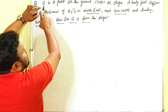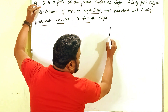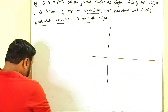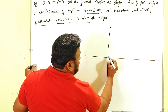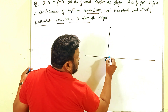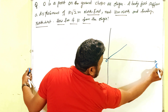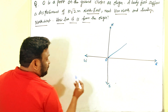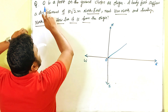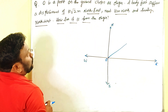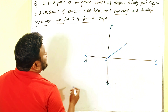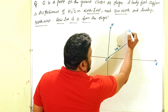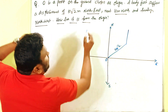O is the point on the ground, so we take it as the origin. From that, I'm drawing the directions: this is east, this is north, this is west, and this is south. A body first suffers a displacement of 10√2 meters in north-east — this direction is the north-east. After that, it is moving again 10 meters north.